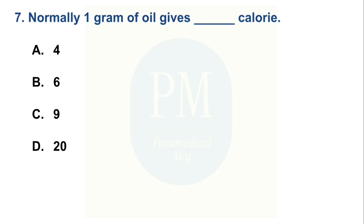Normally 1 gram of oil gives how many calories? Option A: 4, Option B: 6, Option C: 9, Option D: 20. The correct option is Option C, 9.